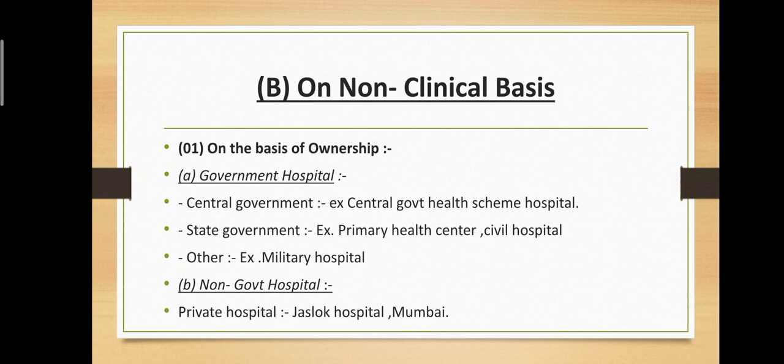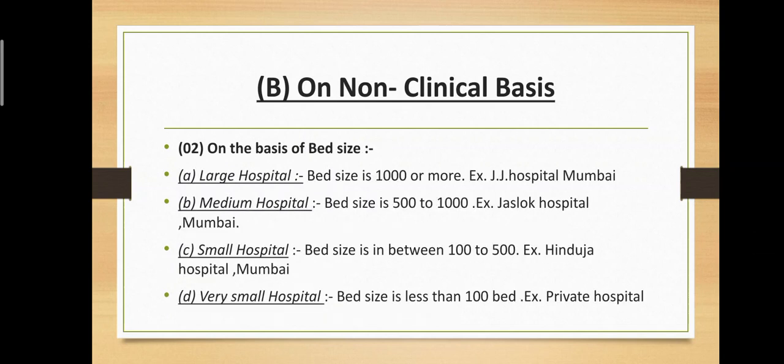On the basis of bed size, hospitals are divided into four subtypes: first, large hospital — bed size is 1000 or more, example: JJ Hospital Mumbai. Second, medium hospital — bed size between 500 to 1000. Third, small hospital — bed size between 100 to 500, example: Hinduja Hospital Mumbai. Fourth, very small hospital — bed size less than 100, example: private hospitals.